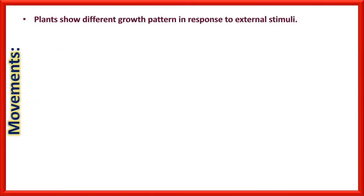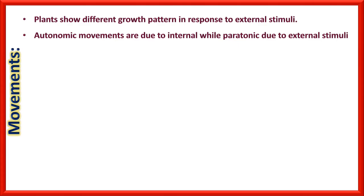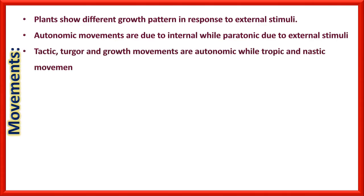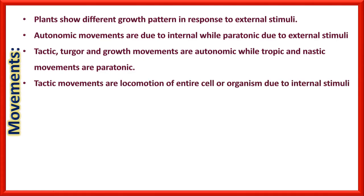Movements: Plants show different growth patterns in response to external stimuli — these growth patterns are the movements. Autonomic movements are due to internal stimuli while paratonic movements are due to external stimuli. Tactic, turgor, and growth movements are autonomic movements, while tropic and nastic movements are paratonic movements. Tactic movements are locomotion of an entire cell or organism due to internal stimuli, resembling locomotion in animals. Positive movements are toward the stimulus while negative are away from it.